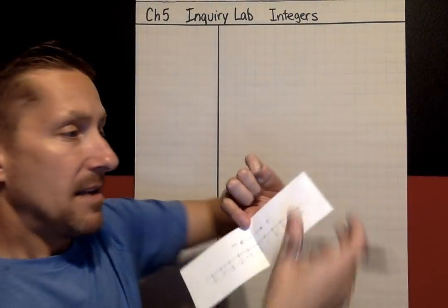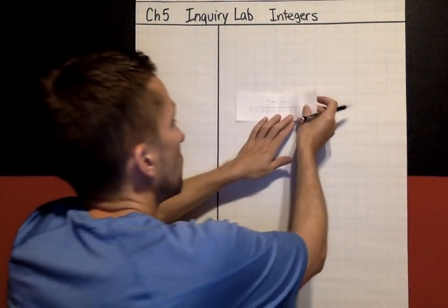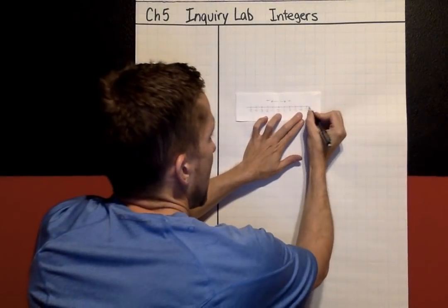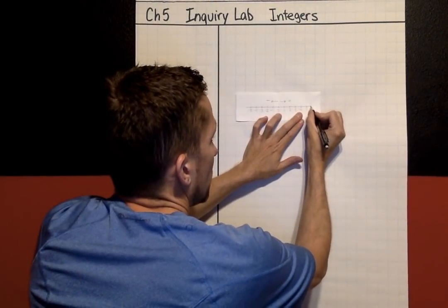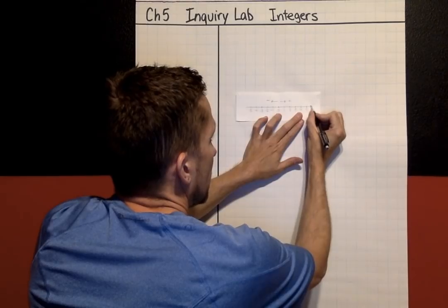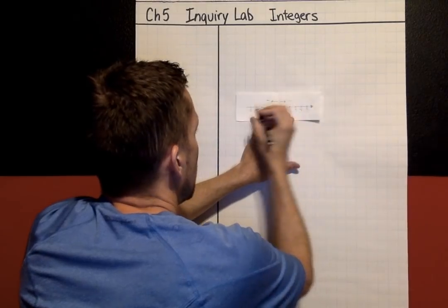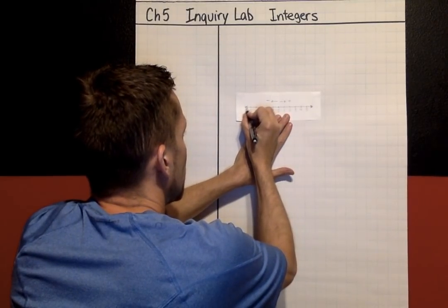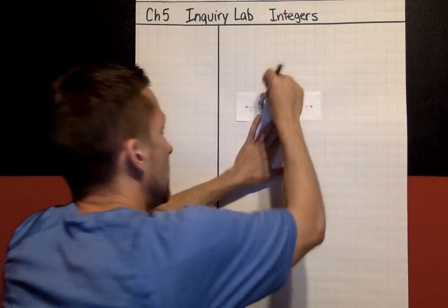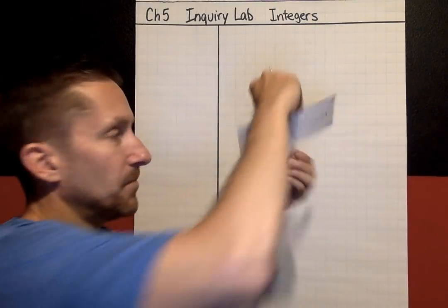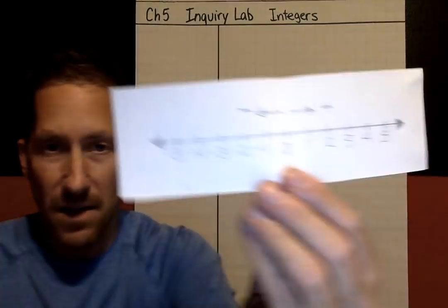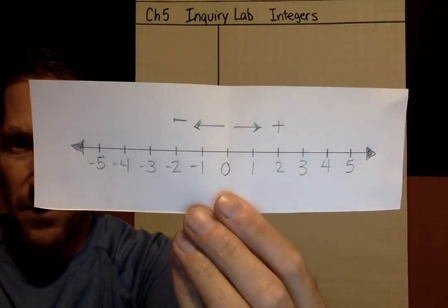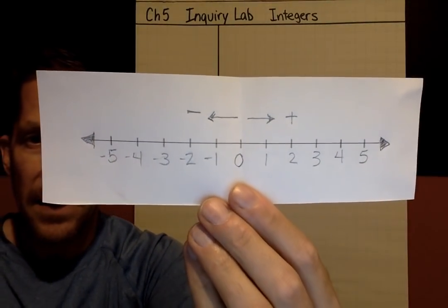The next thing we're going to add is arrows onto the very ends of the number line, because number lines really go forever in both directions. So now your number line looks like this.